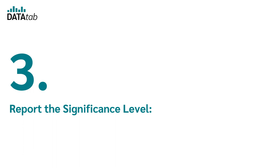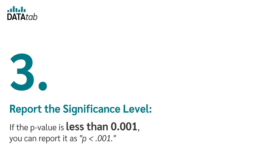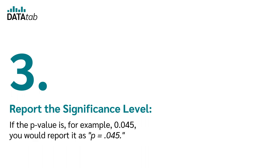Step 3: Report the significance level. Indicate the exact p-value obtained. If the p-value is less than 0.001, you can report it as p < 0.001. If the p-value is, for example, 0.045, you would report it as p = 0.045.